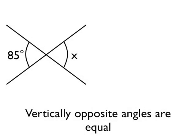In this example, we've got two straight lines which cross each other, and we're told that one of the angles, the angle to the left of the point where the lines cross, that that angle is 85 degrees. Angle X, therefore, must also be 85 degrees, because vertically opposite angles are equal.